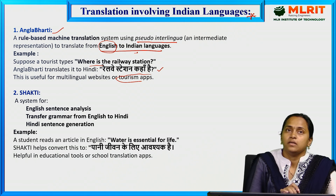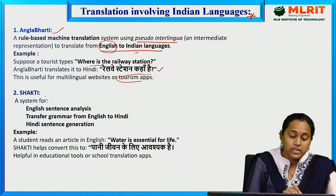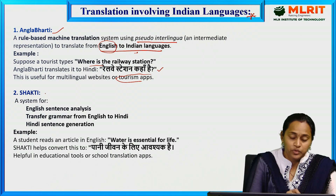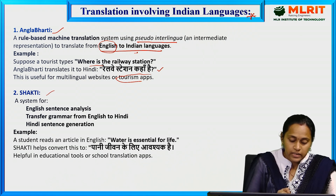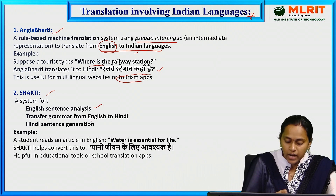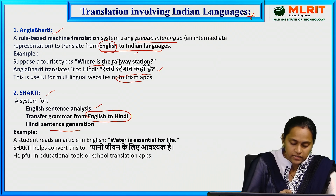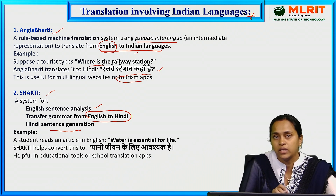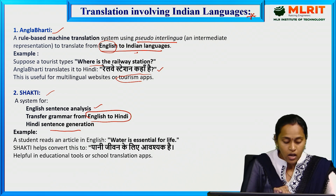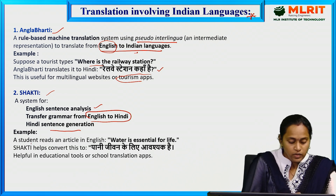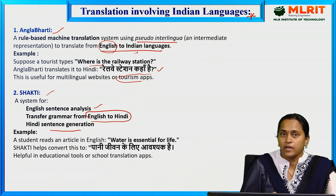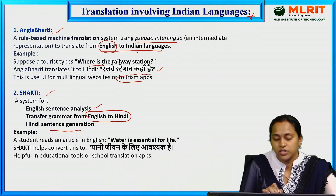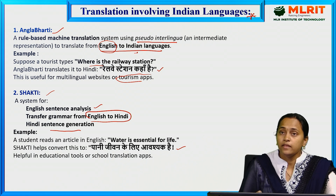The second tool is Shakti — a system for English sentence analysis using transform grammar from English to Hindi, with Hindi sentence generation. It is mainly used for Hindi. For example, 'Water is essential for life' is translated as 'Paani jivan ke liye aavashyak hai.' This tool is helpful in educational contexts.